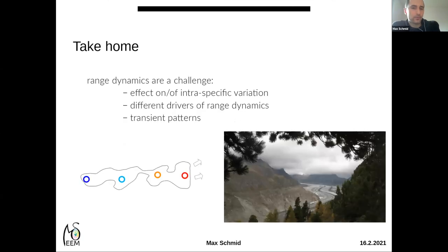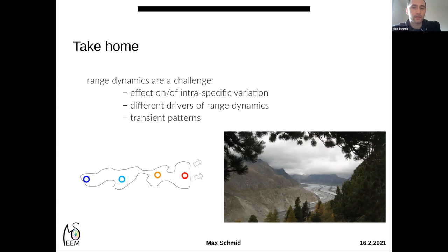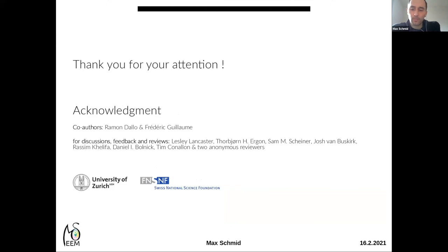To sum up: we can confirm that range dynamics are a challenge — not only because intraspecific variation makes it more difficult to project species' futures, but also because intraspecific variation may itself evolve in the course of range dynamics. We have seen different outcomes for different drivers of range dynamics, and the emergence of transient patterns — outcomes that would not be visible at equilibrium. Thank you for your attention, and I'm happy to take questions.